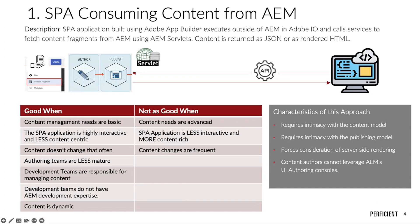Now that we've shown two approaches for integrating AEM with a SPA, let's discuss when each approach is good and not as good. For the first approach — a standalone SPA with AEM providing content — it's good when: content management needs are basic, the SPA application is highly interactive and less content-centric, content doesn't change that often, authoring teams are less mature, development teams are responsible for managing content, development teams don't have AEM development expertise, and content is dynamic. It's not as good when content needs are advanced, the SPA application is less interactive and more content-rich, and content changes are frequent.